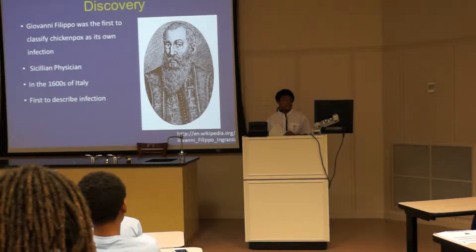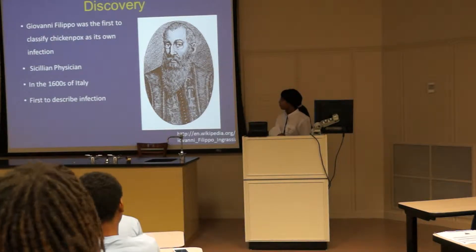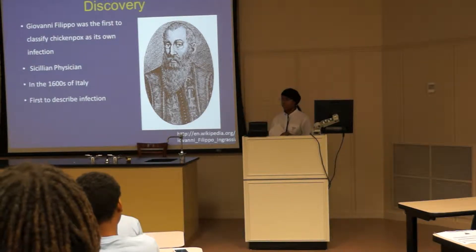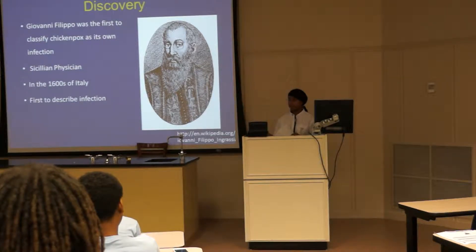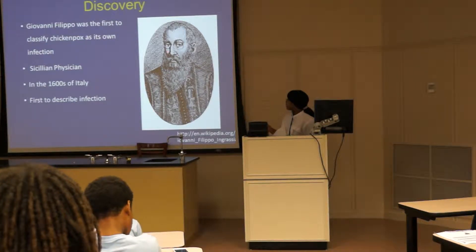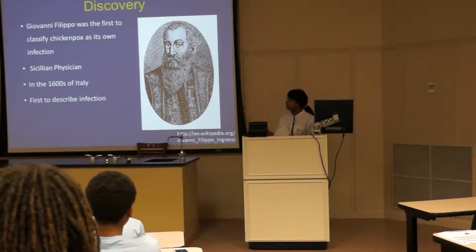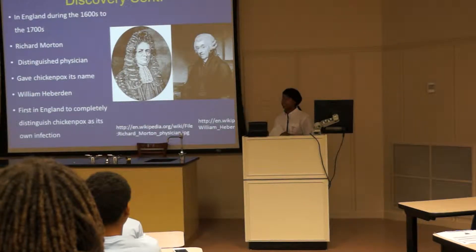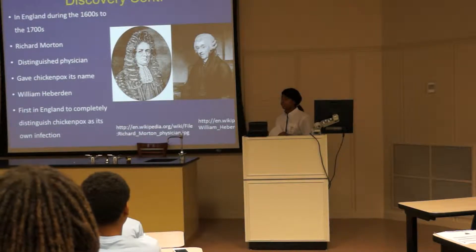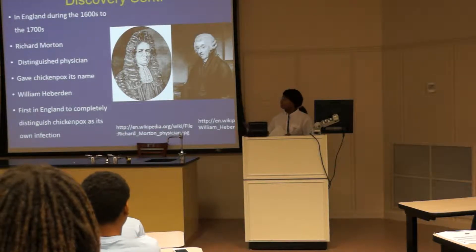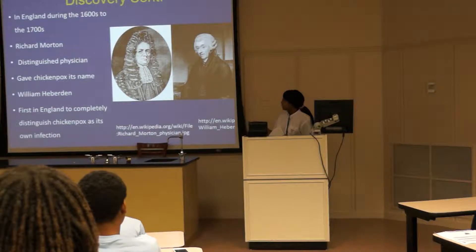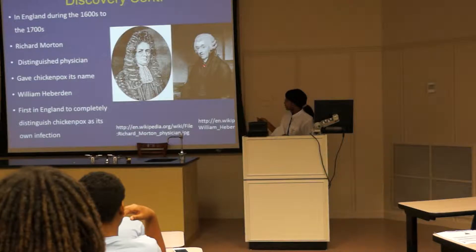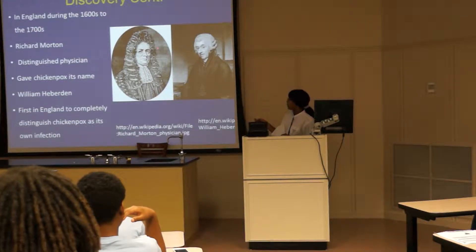Discovery. Giovanni Filippo was the first to classify chickenpox as its own infection. He was a Sicilian physician in the 1600s of Italy and was the first to describe the infection. Here is an image of Giovanni Filippo. In England during the 1600s to 1700s, two men made the breakthrough in England for chickenpox. Richard Morton is the distinguished physician who gave chickenpox its name. William Pemberton was the first in England to completely distinguish chickenpox as its own infection.